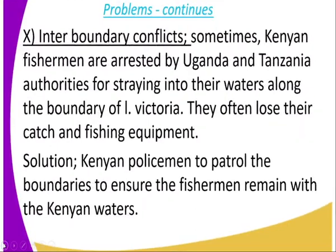Number ten is inter-boundary conflict. Sometimes Kenyan fishermen are arrested by Ugandan and Tanzanian authorities for straying into their waters along the boundary of Lake Victoria. They often lose their catch and fishing equipment. The solution is for Kenyan police to patrol the boundaries to ensure fishermen remain within Kenyan waters and avoid crossing into other countries' water bodies.